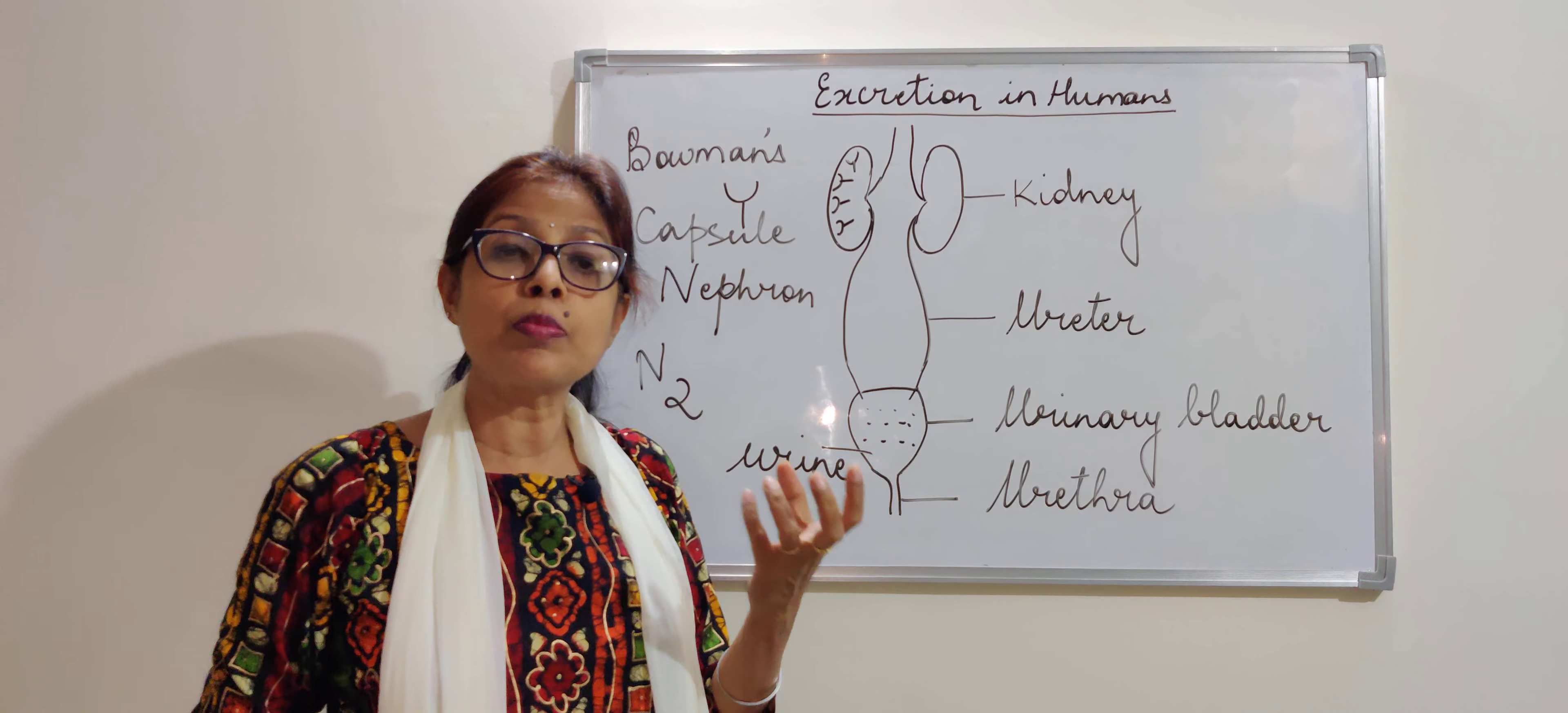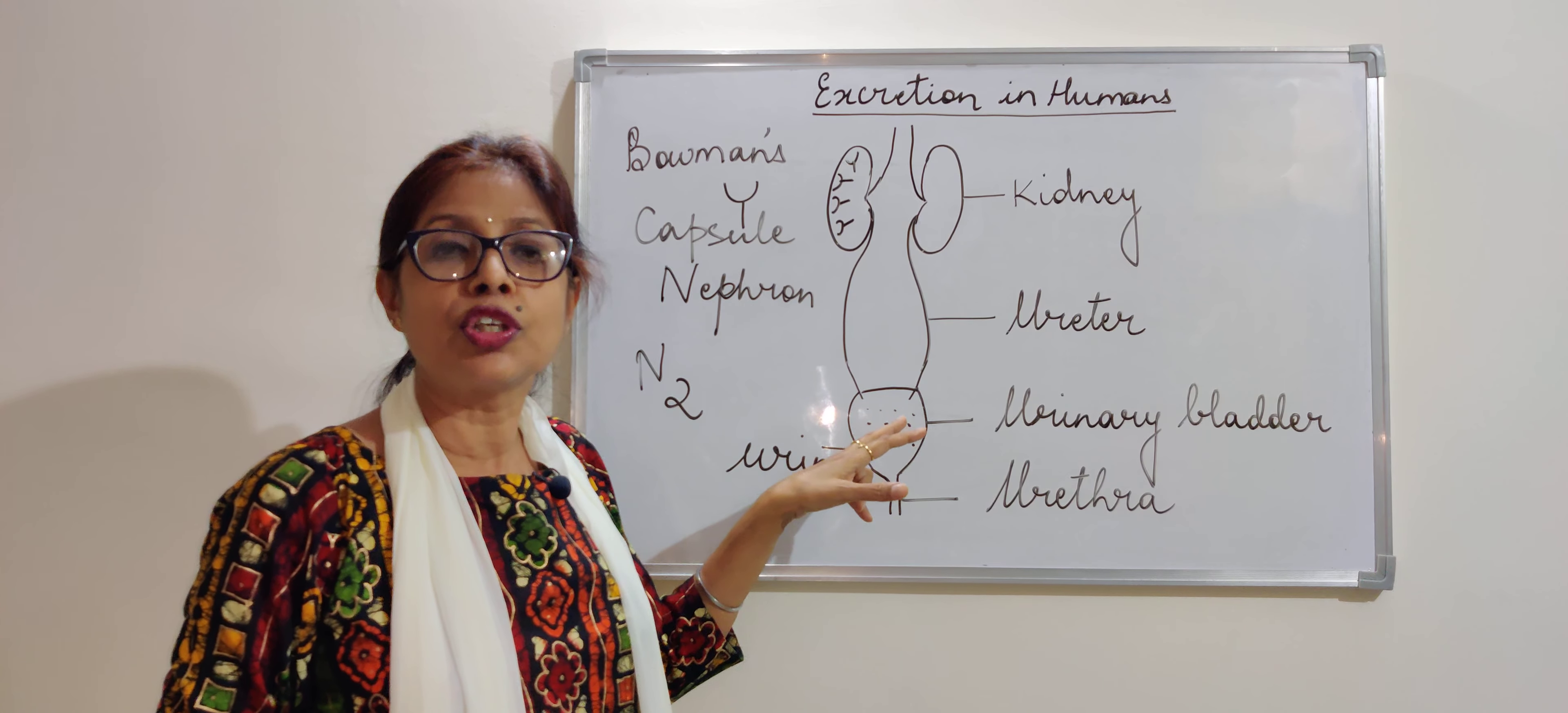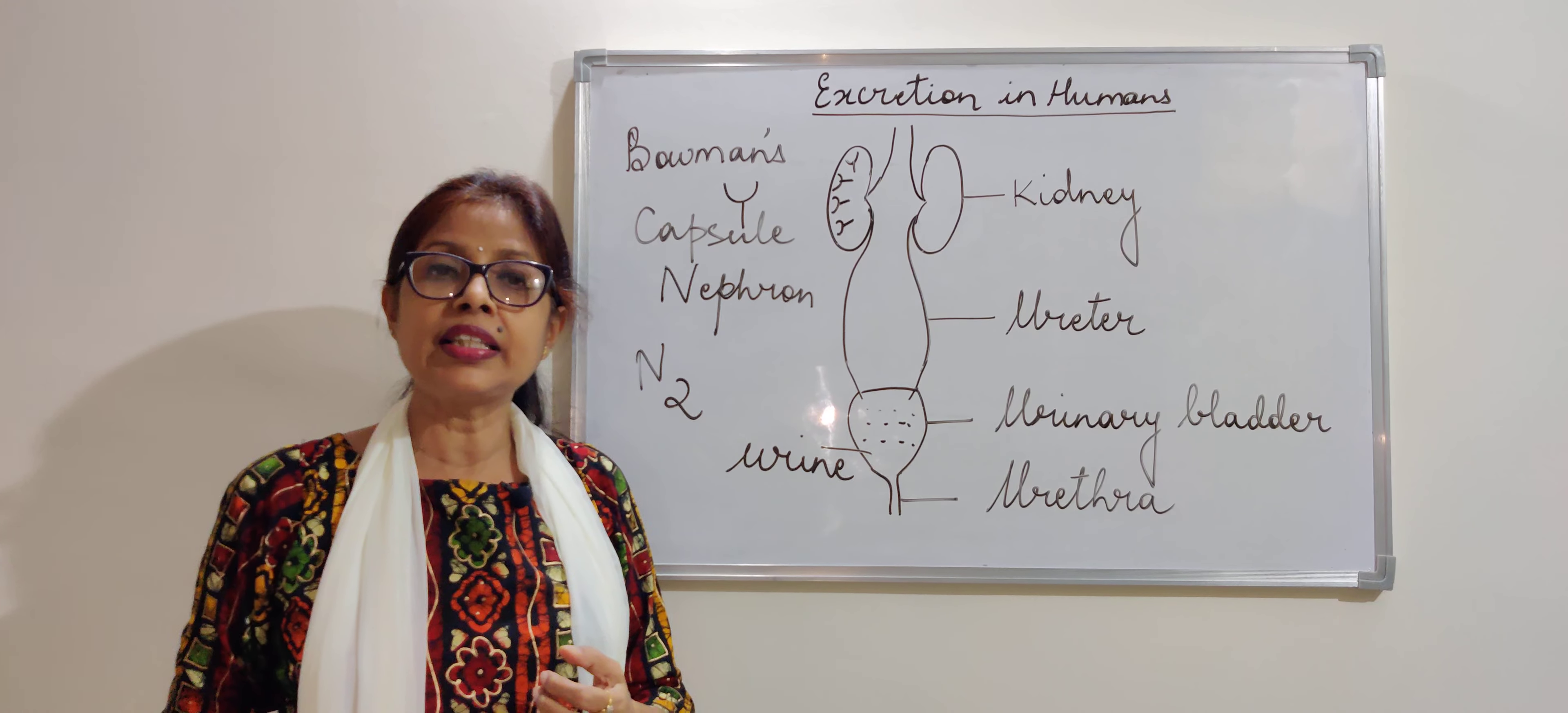When the bladder becomes full with urine, it exerts a pressure. When it exerts a pressure, there is an urge to empty the bladder and that is when you go to the toilets and whatever urine is there in the urinary bladder that is thrown out from the body through the urethra and we get rid of all the waste in the body.